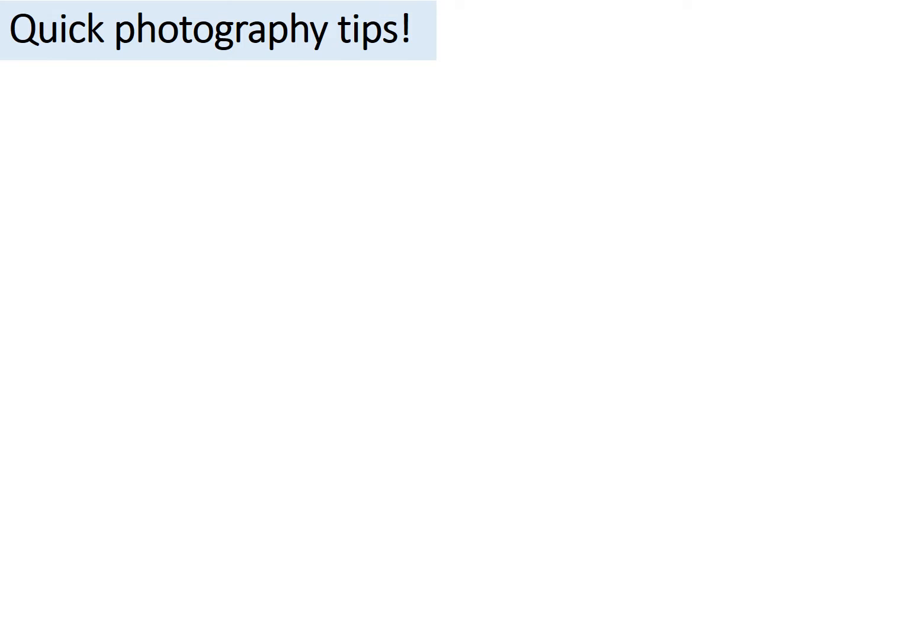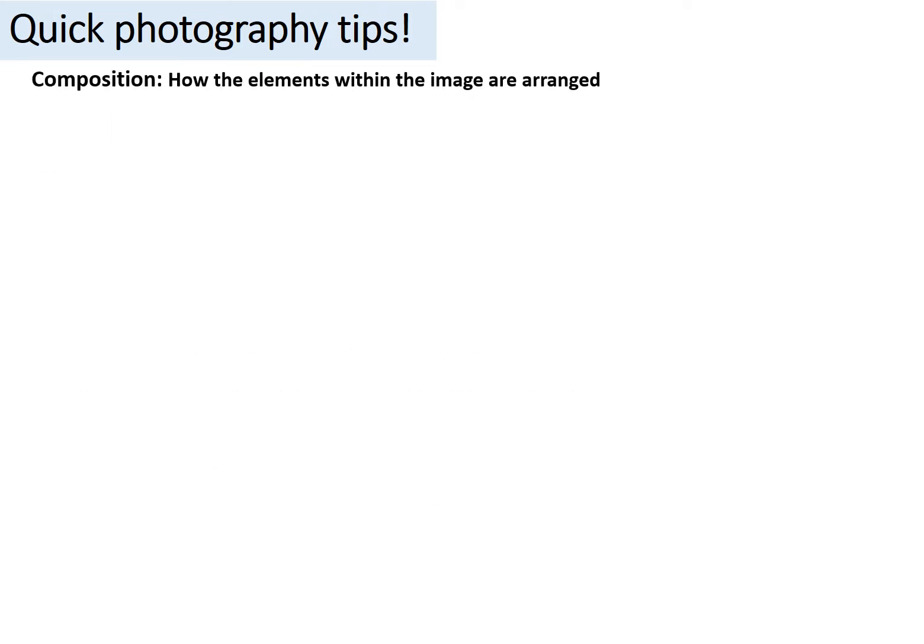I want to give you a few quick photography tips. The first one is to consider something called composition — that's basically how the elements within an image are arranged, so for example making a photograph that appears balanced.